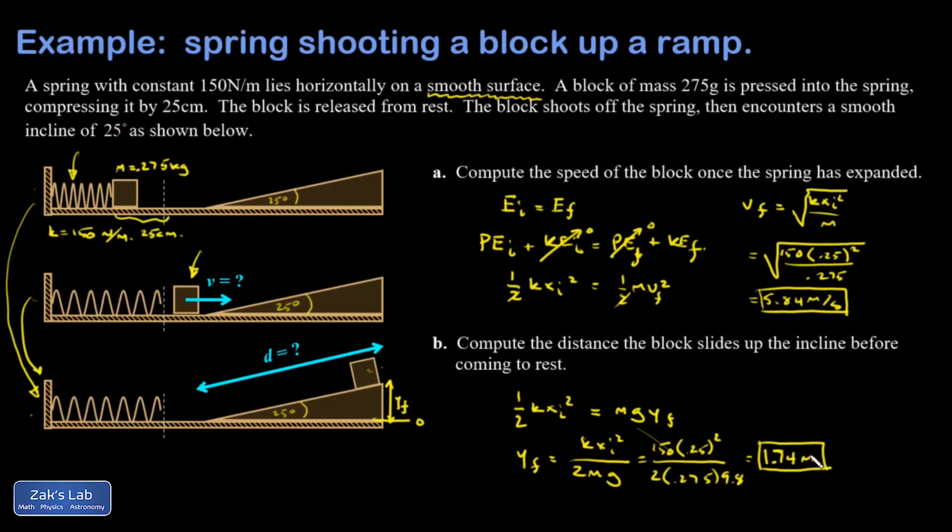All right, so the block slides a little less than 2 meters vertically. But how far does it slide horizontally as that's happening? And that's where the trig comes in. So this side of the triangle is 1.74 meters. But what I want is the hypotenuse. So I have to use a trig function for that.